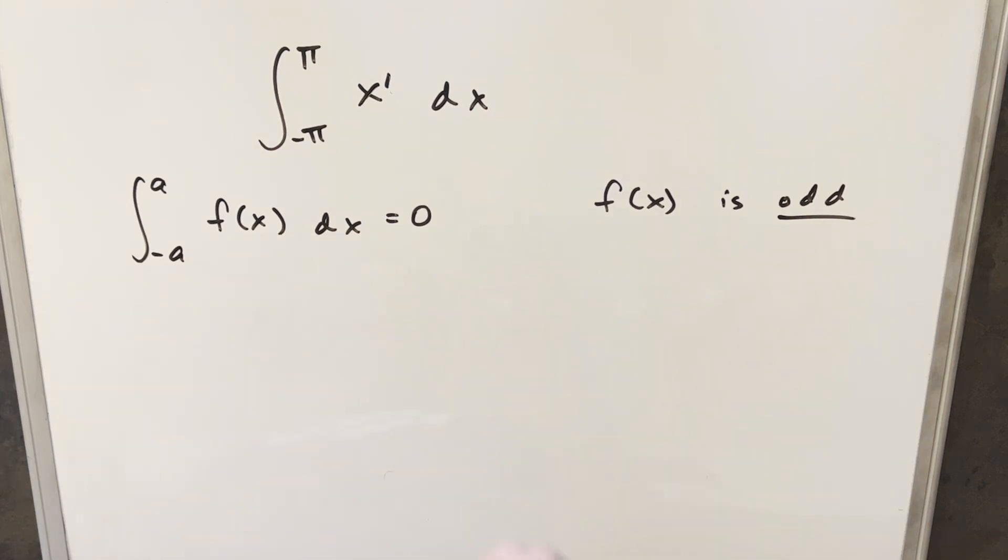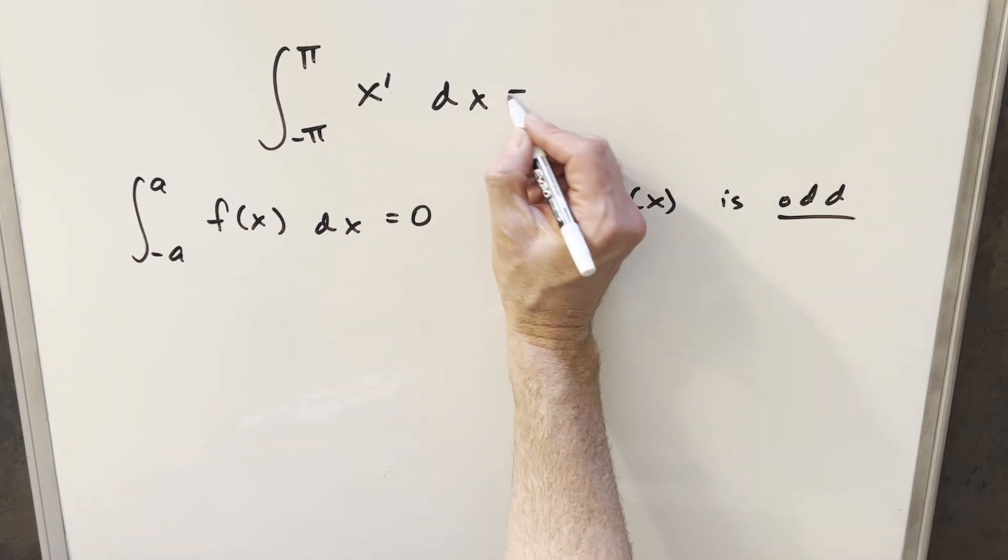So in this case, all we need to do is in our heads, we can check that this is an odd function, we have symmetric bounds, and we can go right to our solution, just zero.